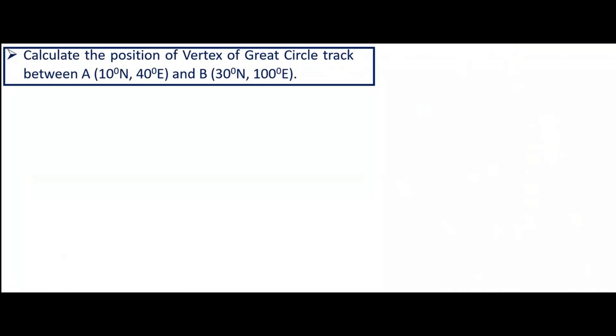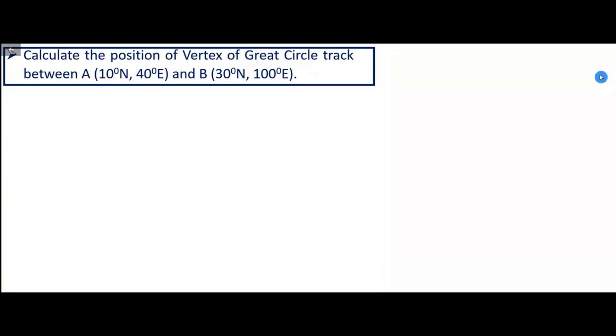Now we reinforce our learning through an example wherein we need to calculate the coordinates of the vertex. So let's practice a question first. You see this question on the screen. We have two positions A and B. We have to first find out the great circle distance between them and we need to find out angle A and angle B. We have to find these three things. So get your notebooks and calculators — you should be able to do it in 15 minutes.